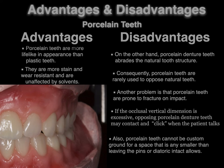For porcelain disadvantages: porcelain denture teeth abrade natural tooth structure because porcelain is harder than enamel, so porcelain teeth are rarely used to oppose natural teeth. Porcelain teeth are prone to fracture on impact since they are glass — a denture with porcelain teeth dropped into a sink may suffer multiple fractures. If the occlusal vertical dimension is excessive, opposing porcelain denture teeth may contact and click when the patient talks — the sound of glass hitting glass.